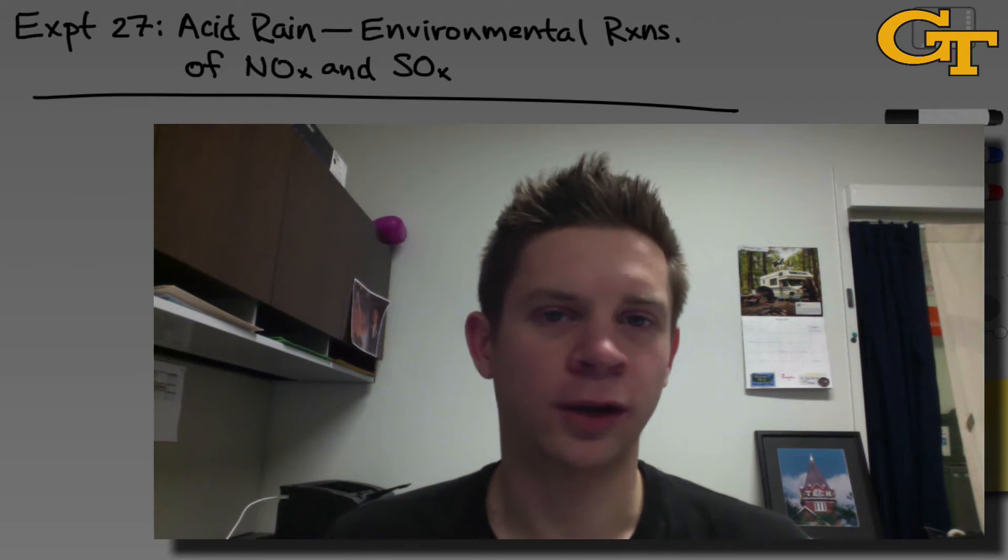Experiment 27 in Chem 1212 is titled Acid Rain, Environmental Reactions of Nitrogen and Sulfur Oxides. The big idea of this experiment is to generate these oxides inside a petri dish, which we're going to use as sort of a mini-environmental chamber, and to observe their effects on rainwater.